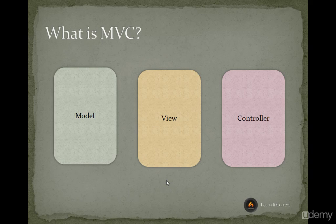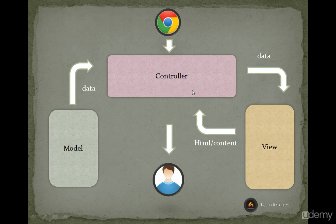Once you request a URL in your browser, it goes to the Controller. The Controller loads data from the Model, then passes that data to the View. The View renders HTML or other content back to the Controller, and the Controller displays it. That's the flow - request comes from the browser to the Controller, Controller gets data from the Model, transfers it to the View, gets the HTML content, and displays it.